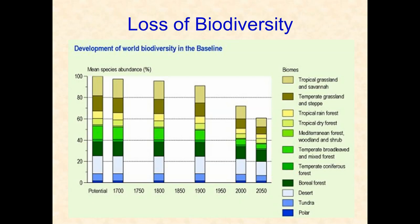Looking at the loss of biodiversity, the first bar represents our potential of 100% biodiversity. Through time — 1700, 1800, 1900, 2000, and projected to 2050 — we see a slow decline. We are projecting that the original 100% biodiversity will be down to 60% by 2050, meaning we will have lost 40% of biodiversity, mainly through human activity.